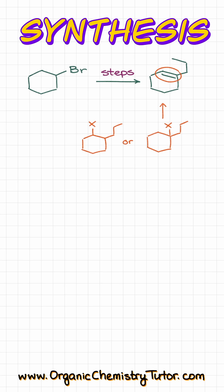Now, the premier way of making carbon-carbon bonds within the scope of our course is going to be via the Grignard reaction, which means that the leaving group that we have here is going to be an OH group. And the elimination here is going to be a simple E1 style elimination with something like sulfuric acid and heat.